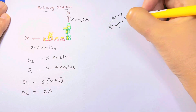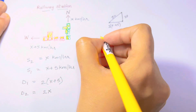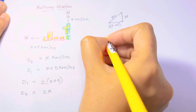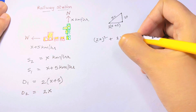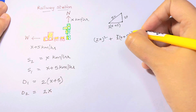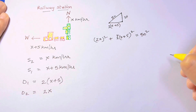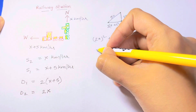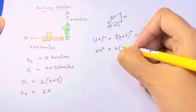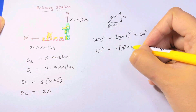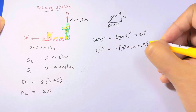We can use the Pythagorean theorem here. So we have (2x)² plus 2(x+5)² equals 50 squared. Let's expand: 4x² plus 4 times (x² + 10x + 25) equals 2500.